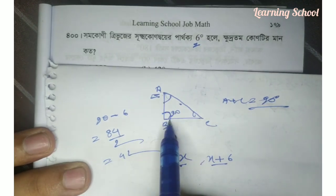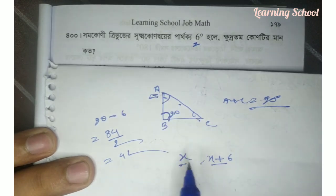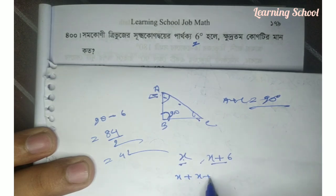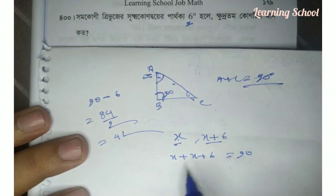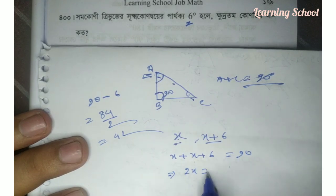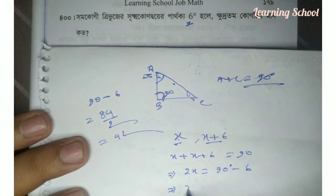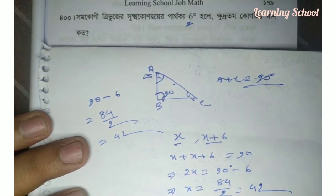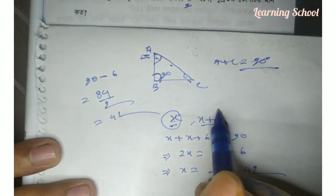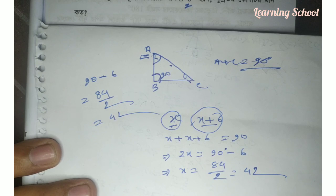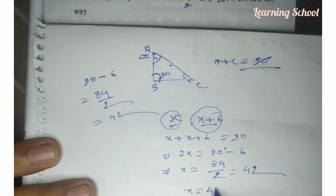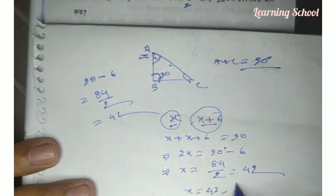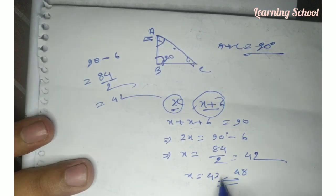Now we have 90 degrees, and we will be 90 degrees for x equals 90 degrees. x equals 84 plus 2, so 42. Now we have x to show you, and x plus 6. So 2 minus 90 is greater than x equals 42. Then x plus 6 equals 48. So 2 minus 90 is greater than x equals 42.